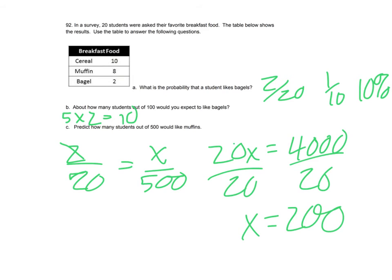Okay, so let's take a look at this chart. We've got 20 students. So what's the probability that a student likes bagels? So two out of 20, one tenth, 10%. About how many students out of a hundred would you expect to like bagels? Well, 20 into a hundred goes five times. So we'd have to increase this whole experiment by five to really know. So then cereal would be 50, muffins would be 40, bagels would be 10. So then we still, now we have a hundred.